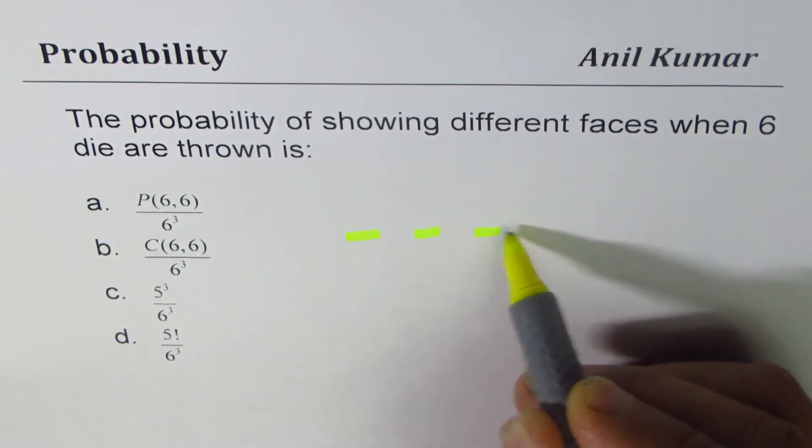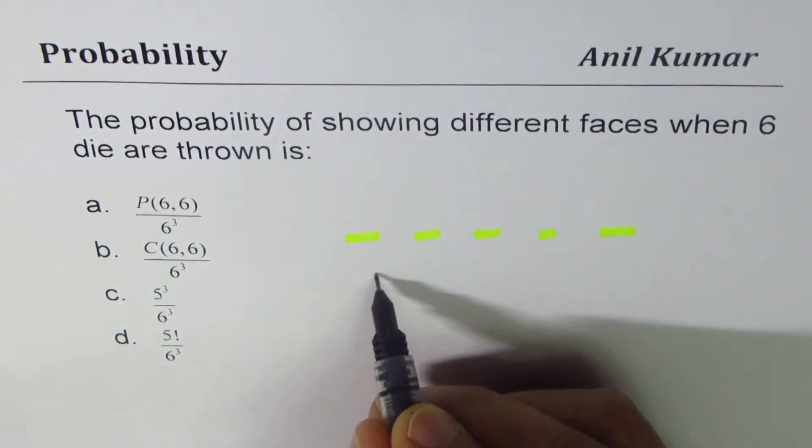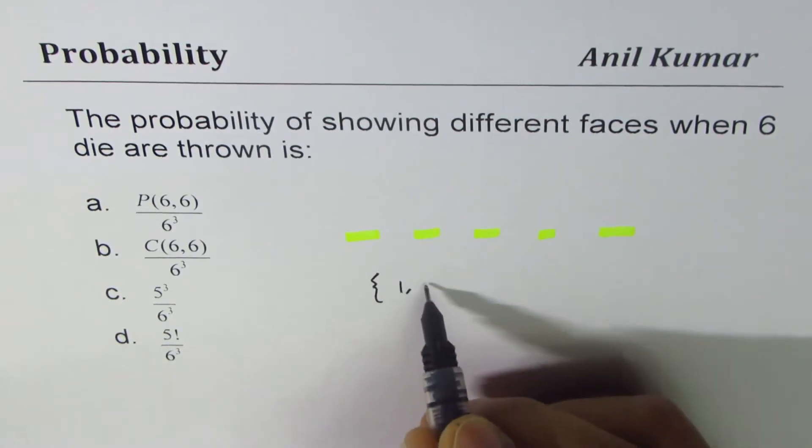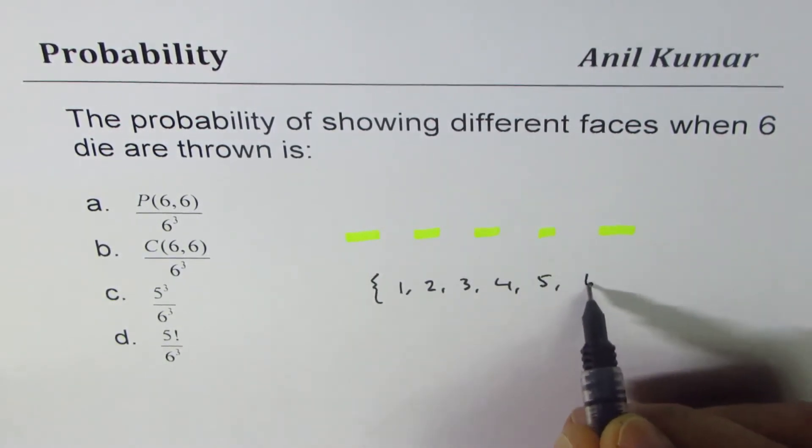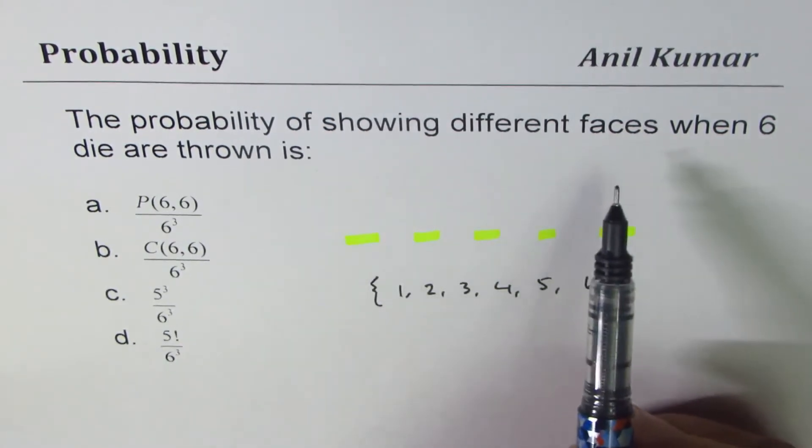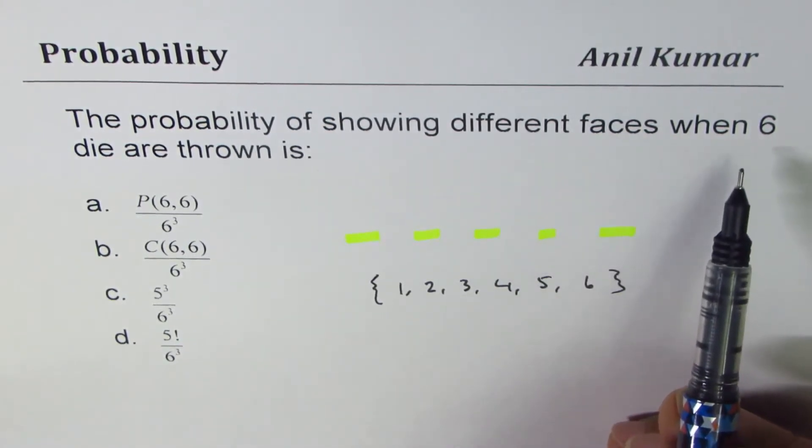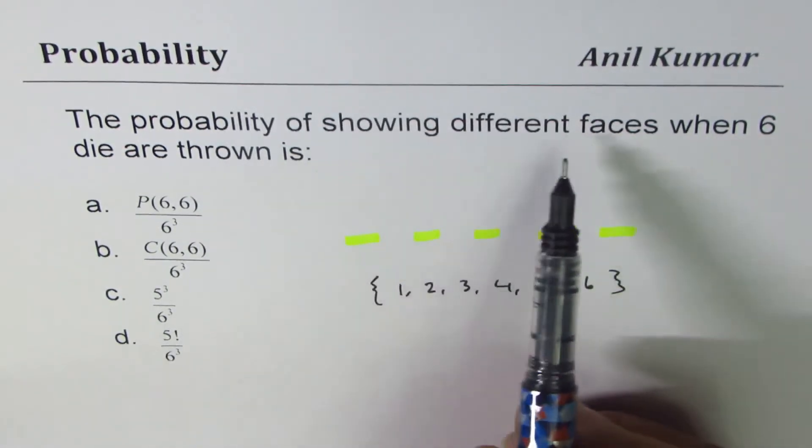So what we are given here is that there are six dice. So let me put these six positions here. Now we want different faces. The outcomes are one, two, three, four, five, and six, right?